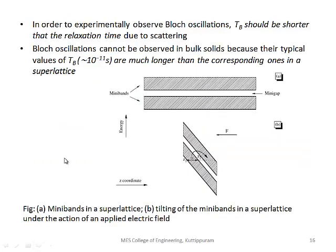In order to observe Bloch oscillations, TB should be shorter than the relaxation time due to scattering. When this condition is satisfied, we can observe Bloch oscillations. However, Bloch oscillations cannot be observed in bulk solids because their typical values of TB (~10⁻¹¹s) are much longer than the corresponding relaxation times in a superlattice.